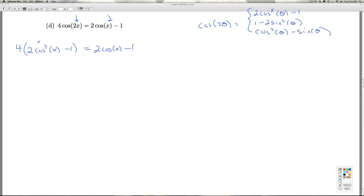Any time in algebra you do a replacement or substitution, you want to go ahead and put that in parentheses so we don't forget that we have to distribute this 4 to both terms. So we get 8 cosine squared x minus 4 is 2 cosine x minus 1.